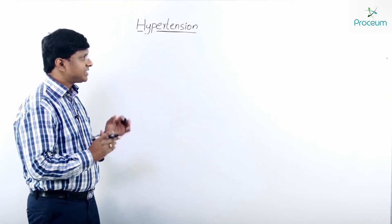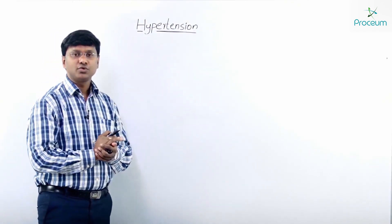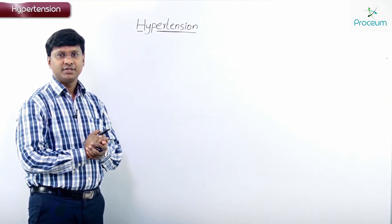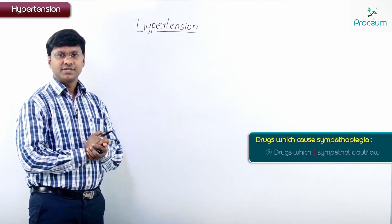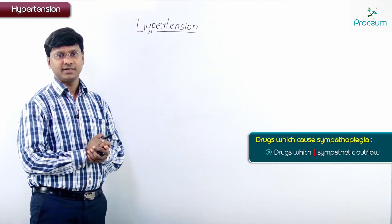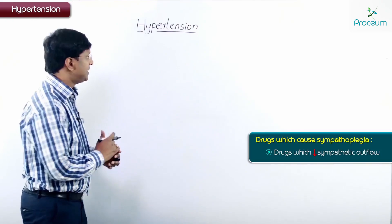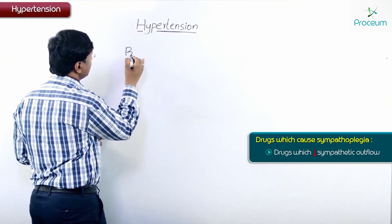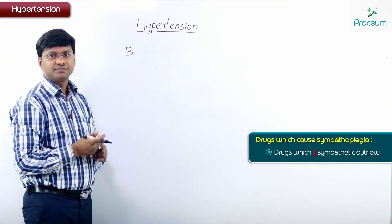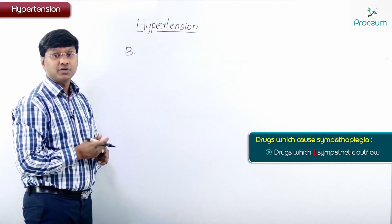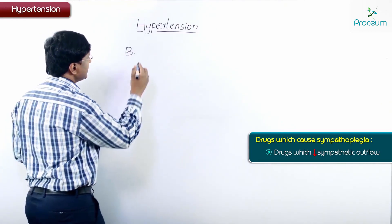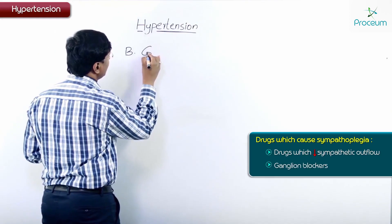I have discussed one group of drugs which will cause sympathoplegia — that is, drugs which will reduce the central sympathetic outflow. Next, the second group of drugs which will cause sympathoplegia is ganglion blockers.